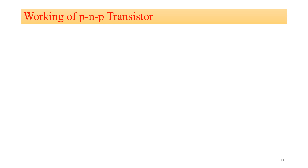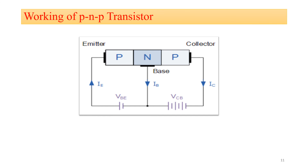Now let's see the working of the PNP transistor. The picture shows the PNP transistor connected in the active region because the base-emitter junction is in forward bias — the positive terminal of VBE is connected to P-type and the negative terminal to N-type base — while the collector-base junction is in reverse bias. With the PNP transistor in the active region, holes are emitted from the P-type emitter across the forward-bias base-emitter junction into the base, where there are very few electrons available for recombination in the lightly doped base.